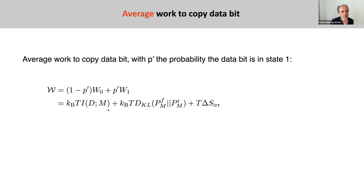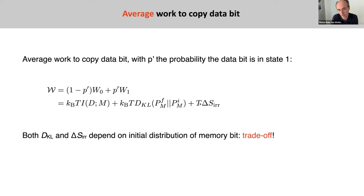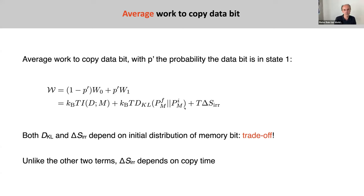The first term is set by the statistics of the data bit and the required precision — there's nothing to optimize here. The second term depends on the final distribution, which is set by the statistics and precision and cannot be optimized, but the initial distribution of the memory bit can be optimized. The irreversible entropy production also depends on the initial distribution of the memory bit. This leads to an interesting trade-off between these two terms. While the mutual information and the KL divergence do not depend on time, the last term does, so we get a time-dependent trade-off between these last two terms.